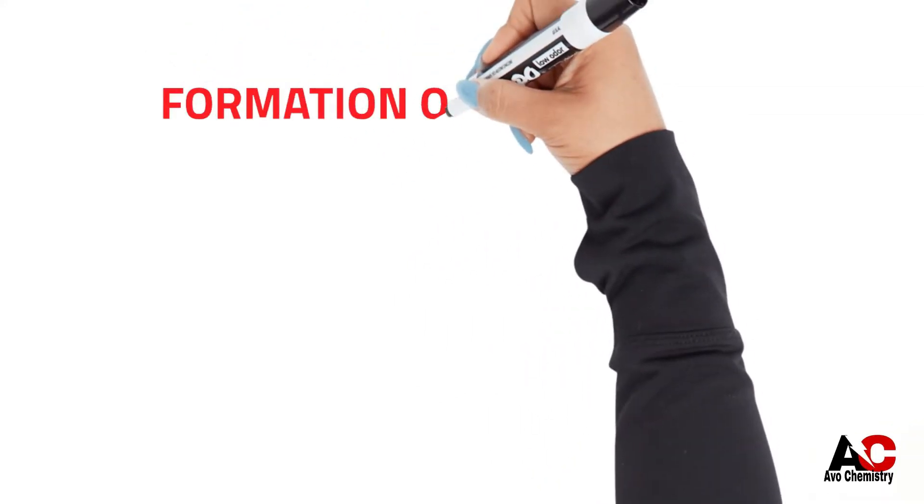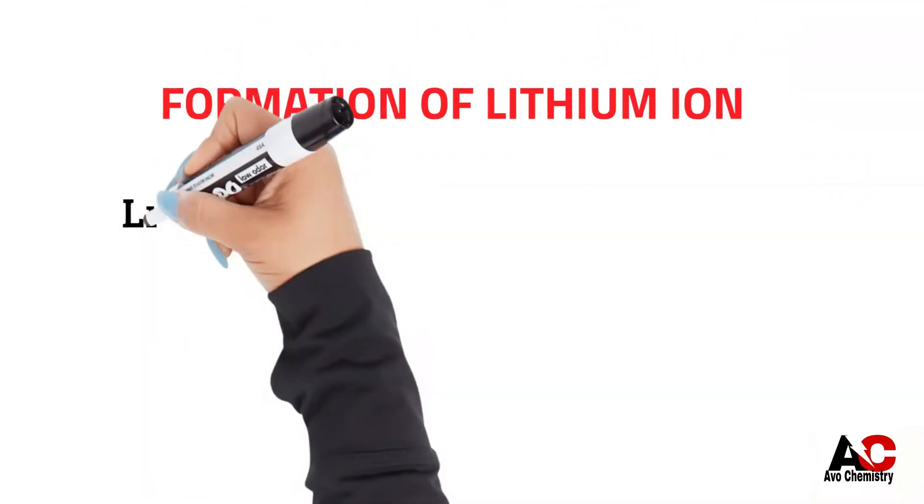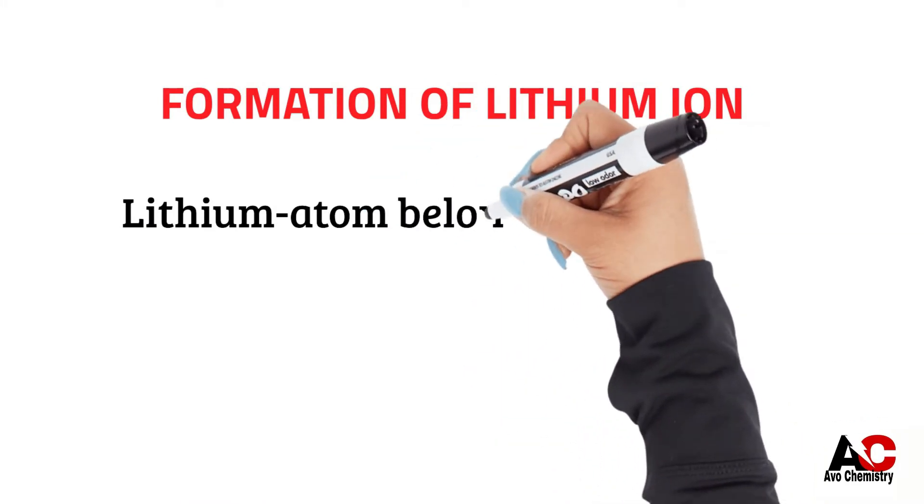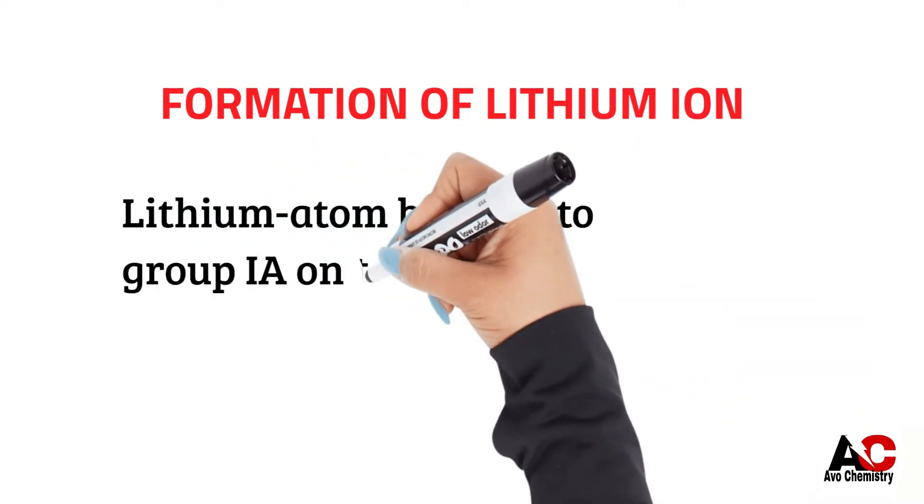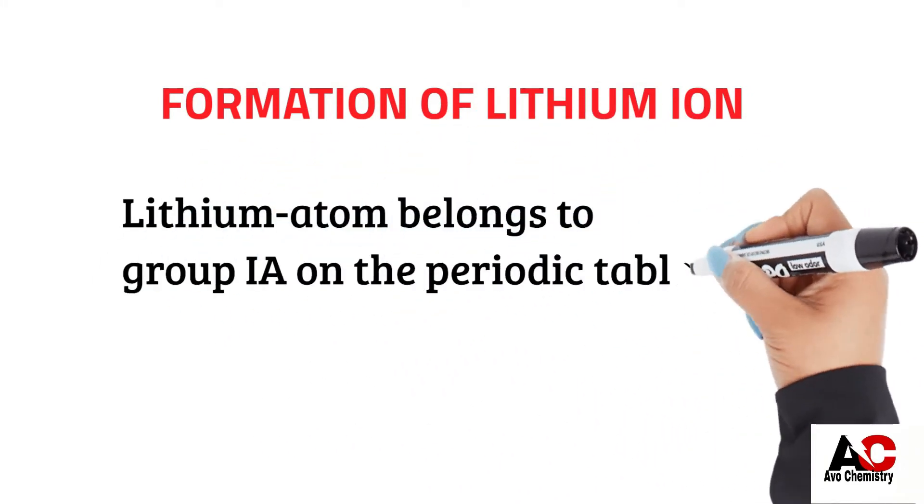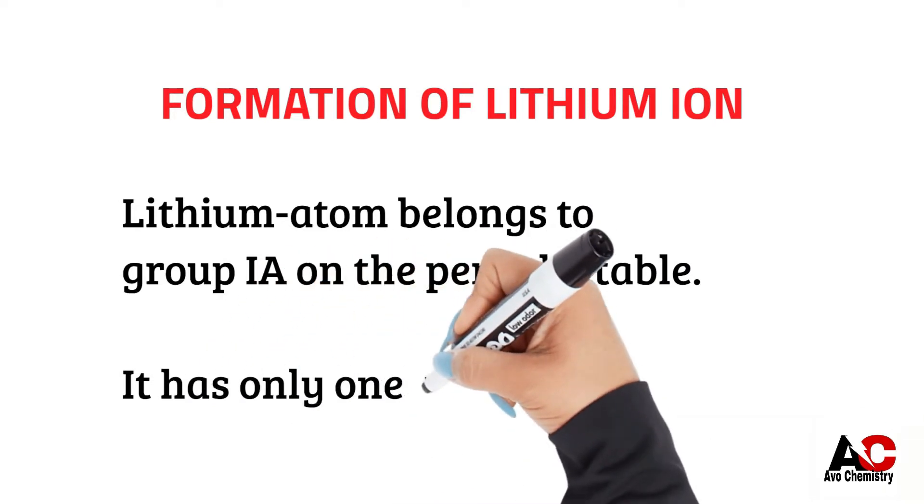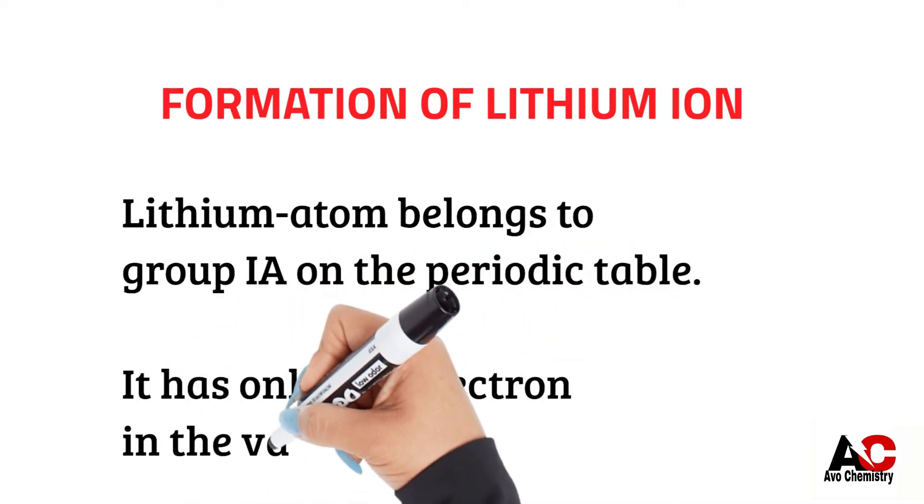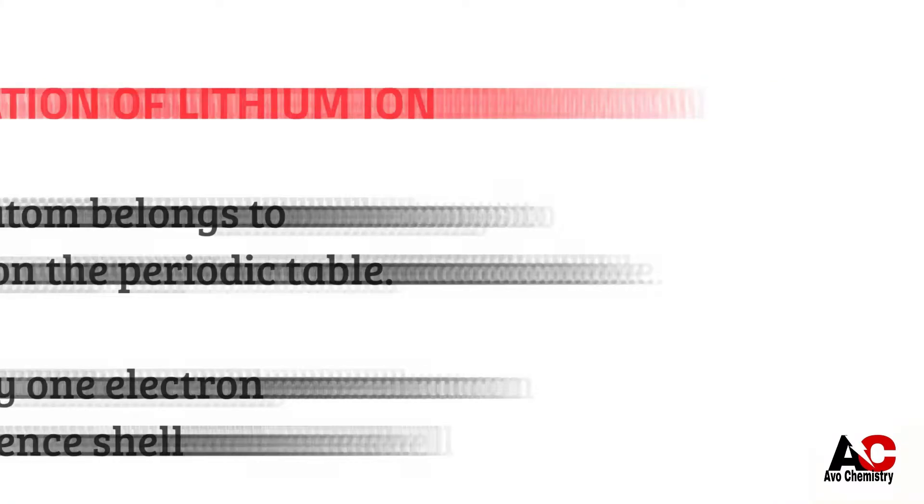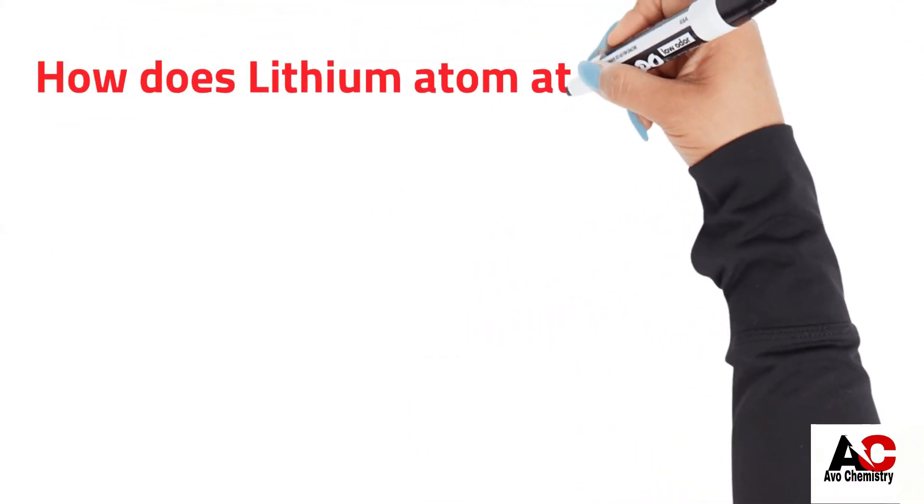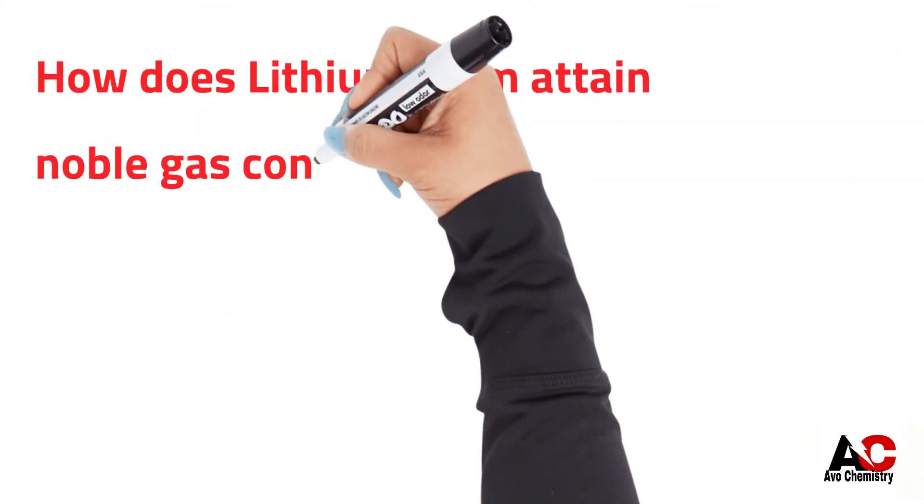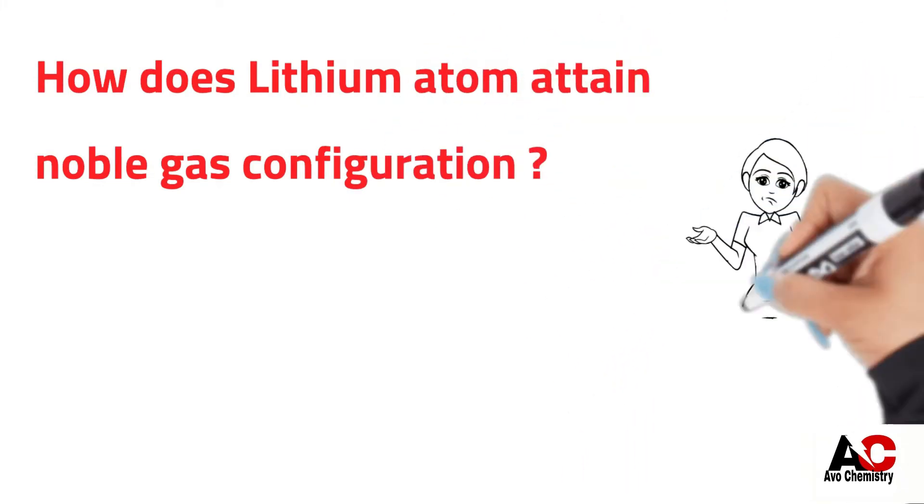Formation of lithium ion. Lithium atom belongs to group 1A on the periodic table, so it has only one electron in the valence shell. But how does lithium atom attain noble gas configuration in order to gain stability?